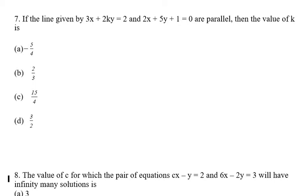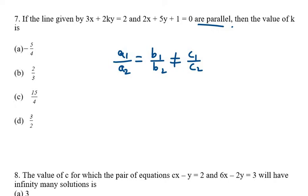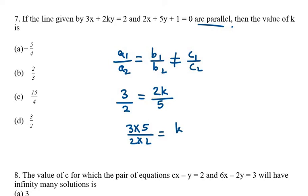Question number seven: if the lines 3x + 2ky = 2 and 2x + 5y + 1 = 0 are parallel, find the value of k. For parallel lines, a1/a2 = b1/b2 ≠ c1/c2. Here a1 = 3, a2 = 2, b1 = 2k, b2 = 5. Using cross multiplication: 3 × 5 = 2 × 2k, giving 15 = 4k, so k = 15/4. The correct option is C.